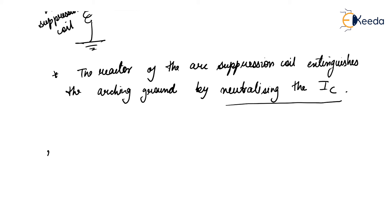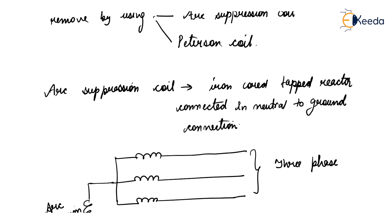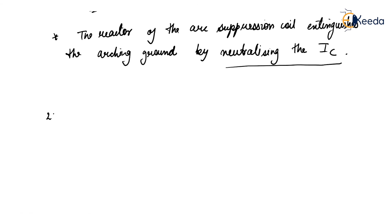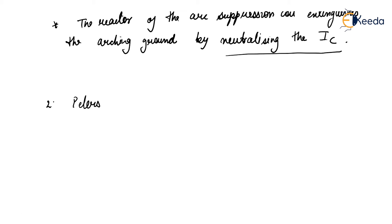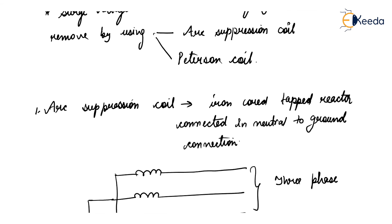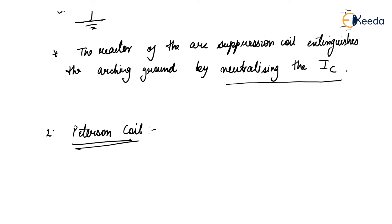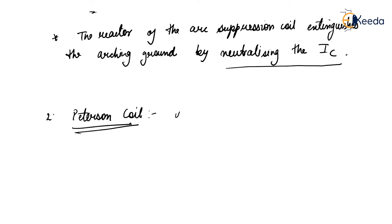The second method is the Peterson coil, which isolates the system in which the healthy phases continue to supply power.